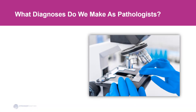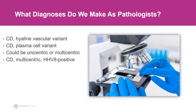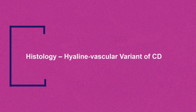So what diagnosis do we make as pathologists? What are you going to see in our reports? We are either going to call Castleman disease a hyaline vascular variant, a plasma cell variant, or we can diagnose Castleman disease multicentric HHV8 positive. In the next slides, I'm going to go over histology of different histologic variants of Castleman disease, starting with the hyaline vascular variant.